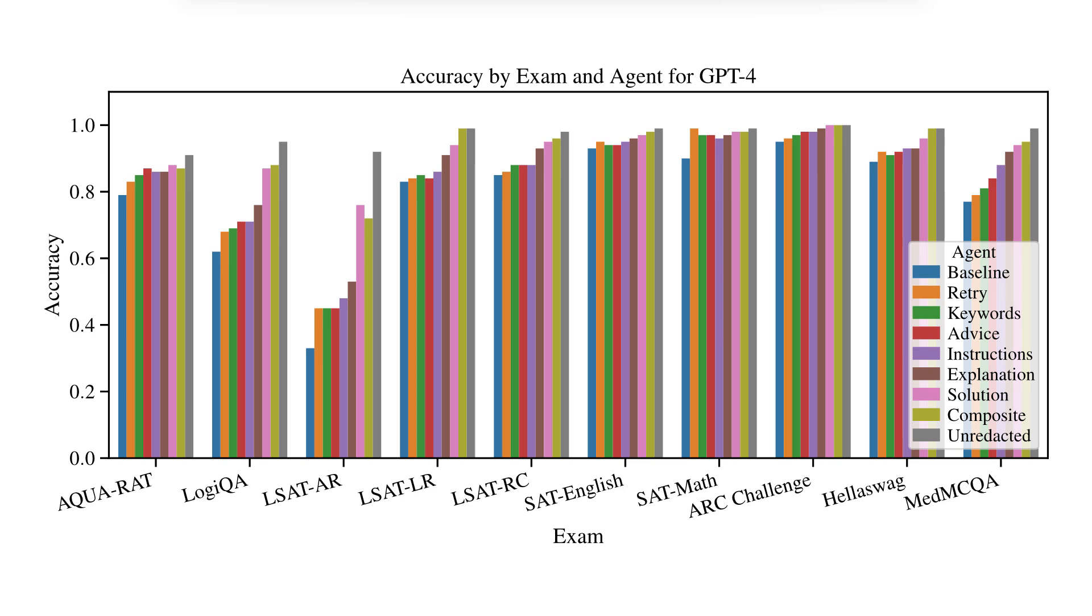Finally, we analyzed accuracy by exam and agent for each of the LLMs. As we can see, there was a similar increase in correct answer accuracy as a function of the amount of information contained in the self-reflection. However, some exams, like the LSAT Analytical Reasoning exam, were significantly more impacted by self-reflection than others.